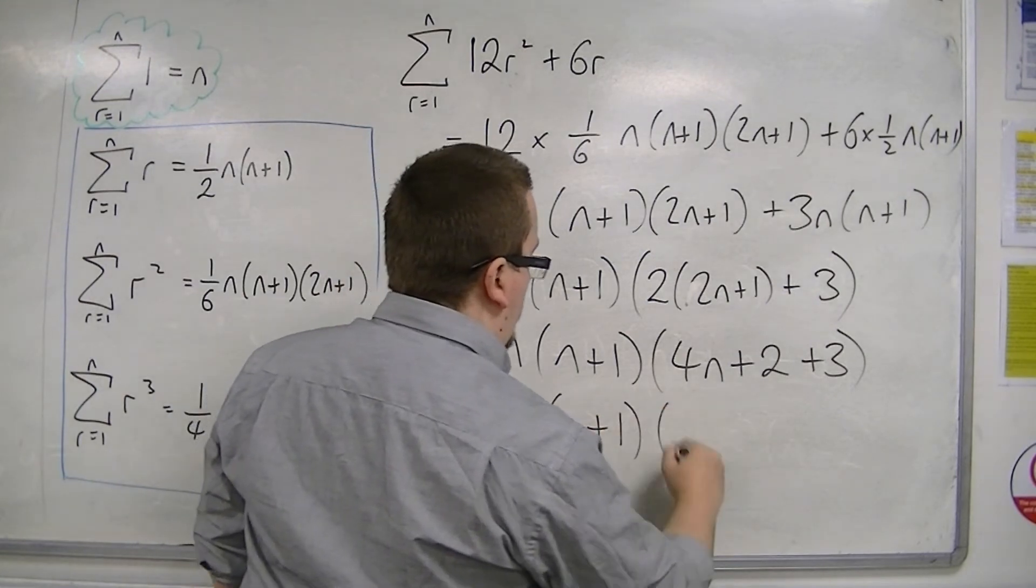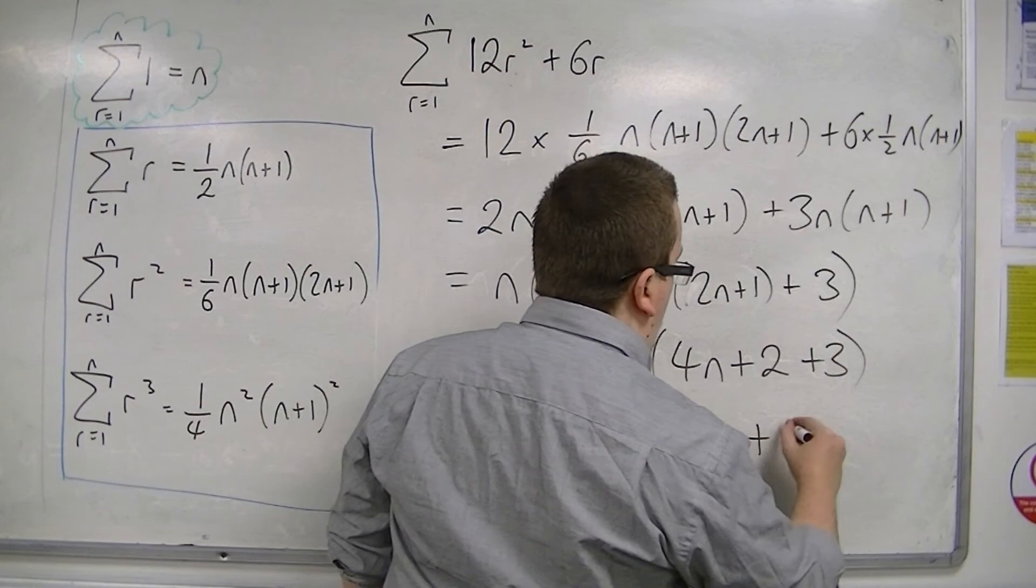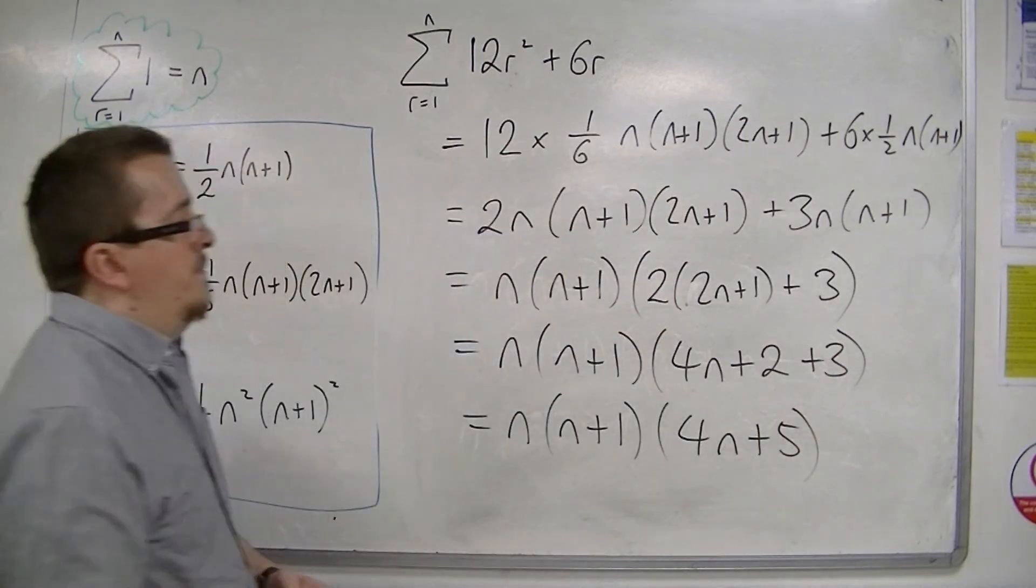So we can write this as n, n plus 1, 4n plus 5, and that's as far as we can go.